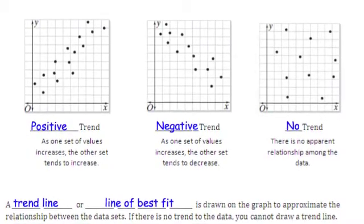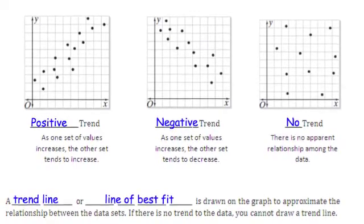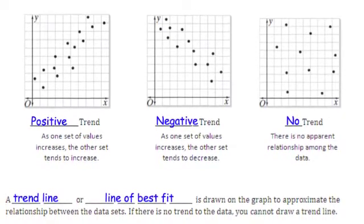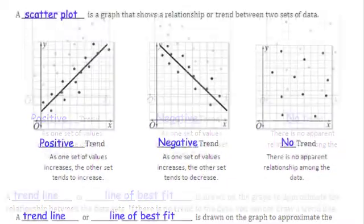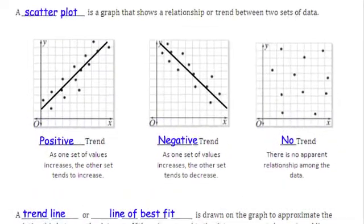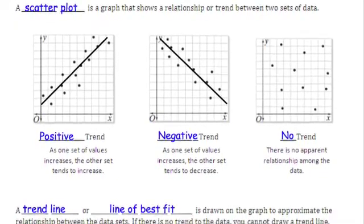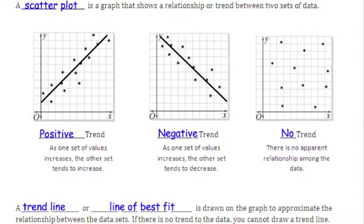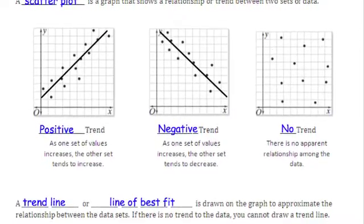A trend line, or line of best fit, is drawn on the graph to approximate the relationship between the data sets. As you can see, on the first two graphs, a line has been drawn in between the different plotting points to show that there is a positive trend or negative trend. If there is no trend like the last graph, a line cannot be drawn.